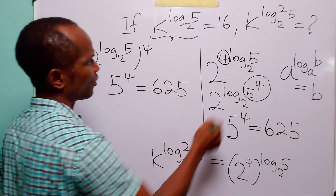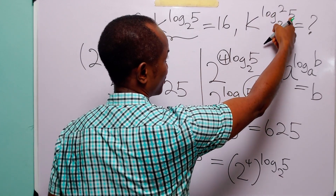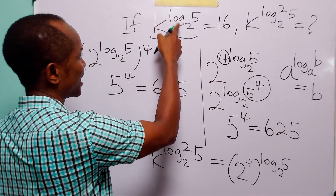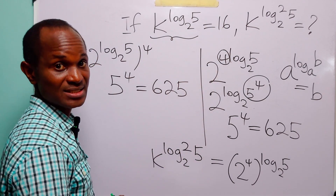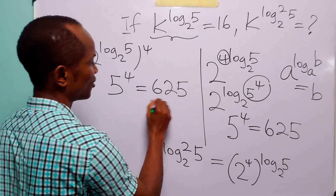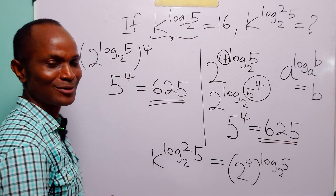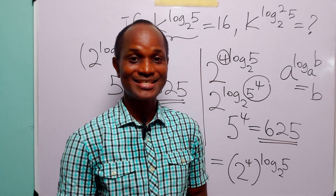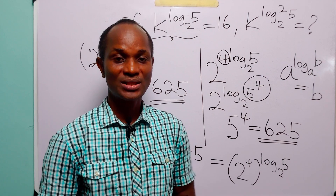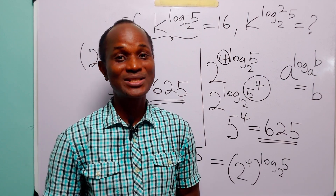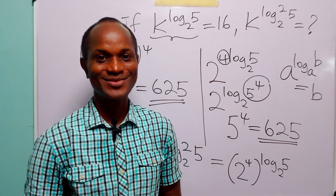So the value of k to the power log₂²(5), when k to the power log₂(5) equals 16, is 625. With that we come to the end of today's exercise. I hope you learned something new. If you enjoy such content, please subscribe to the channel, leave a like to support the channel, thanks for watching, and see you in the next one.